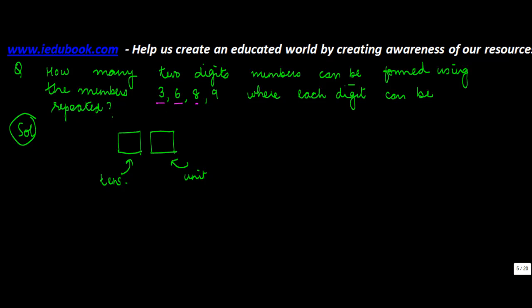So the total numbers is equal to four, where each digit can be repeated. If you see, the total number of ways in which this can be done is the way in which these two digits can be filled in using these numbers. So if you see, the tens place can be filled by either of these four numbers. Let's call this as M and N as the number of ways.